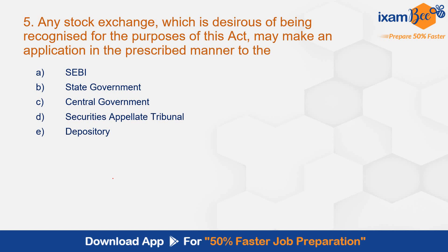Question number 5: 'Any stock exchange which is desirous of being recognized for the purposes of this act may make an application in the prescribed manner to the —' The correct answer is C, the central government. Application for recognition is made to the central government. This is as per section 3 of SCRA.